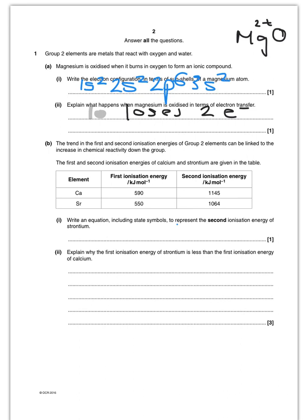So now moving on, we're going to write an equation for the second ionisation of strontium. If it's the second ionisation of strontium, I am forming Sr2+. So I start off with Sr+, remember this is in the gaseous state, to form Sr2+, in the gaseous state, plus an electron.